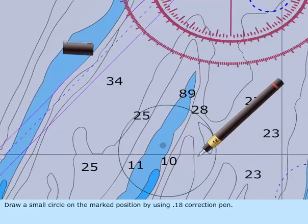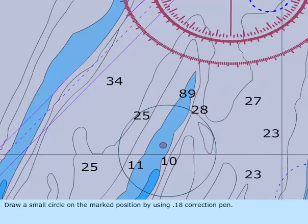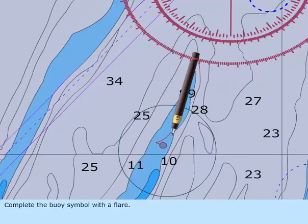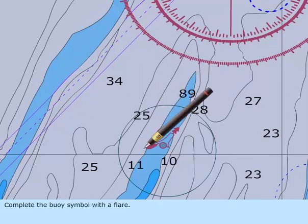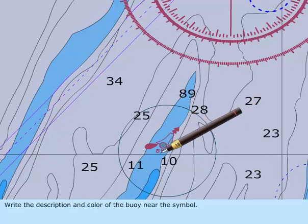Draw a small circle on the marked position by using a 0.18 correction pen. Complete the buoy symbol with a flare. Write the description and color of the buoy near the symbol.